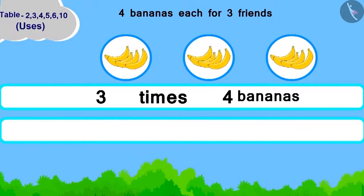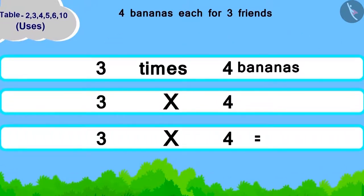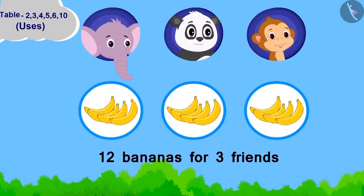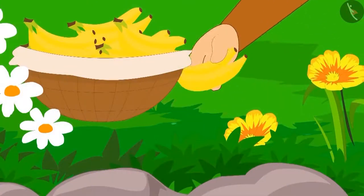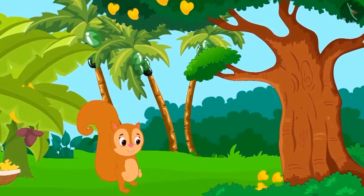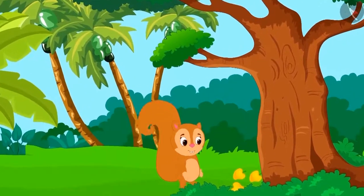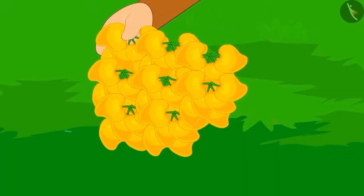Now, how will we write it in the form of multiplication? Three multiplied by four. Children, can you write its answer by using the table of four? Absolutely right! Chanda will have to take twelve bananas for her three friends.